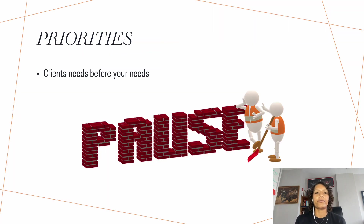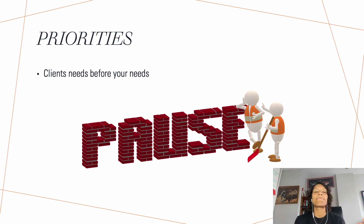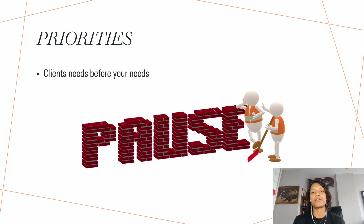In terms of priorities, in this type of relationship the client's priorities and needs come first. There are some exceptions to that — as we talked about in 2A, we want to make sure that we have self-awareness and know what our own needs are so that our needs aren't negatively impacting therapy.